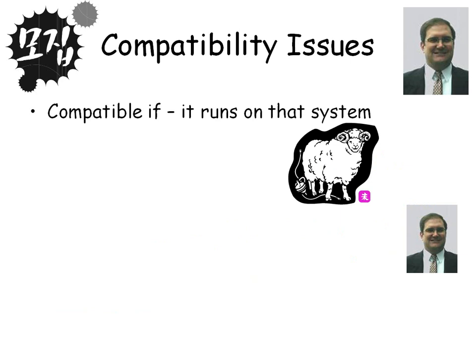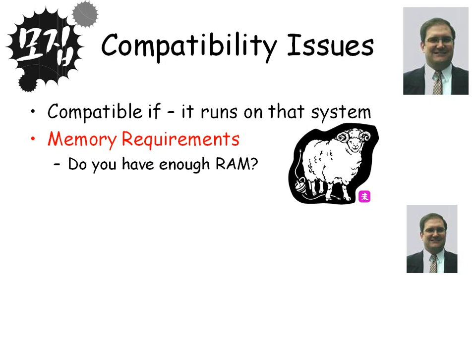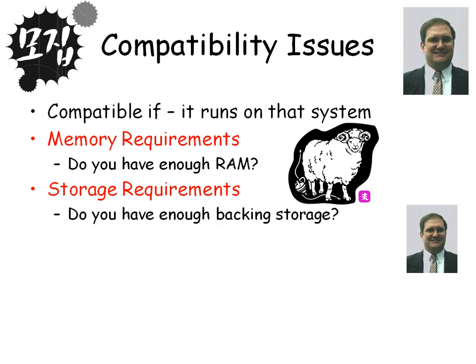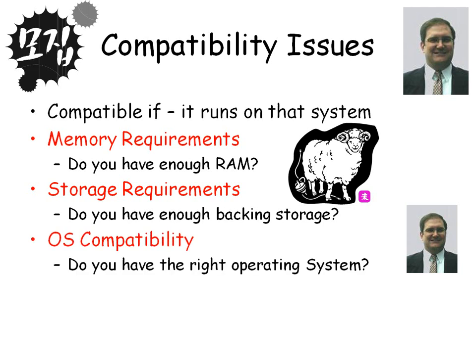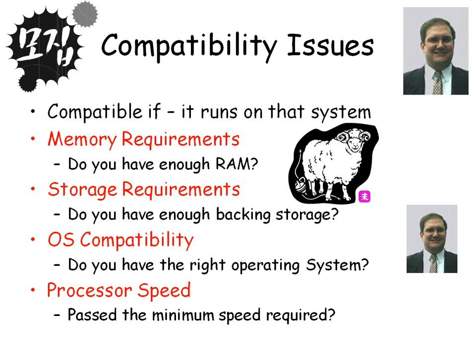You also need to think about compatibility issues that software could encounter when you try to run or install it on a computer system. These include: memory requirements — do you have enough RAM to run the program, as older systems may have limited RAM; storage requirements — do you have enough storage to install the program; operating system compatibility — older games that worked on Windows 98 may not work on newer operating systems without an emulator; and processor speed — does your processor meet the minimum speed required. This information is usually found in the program's technical guide.